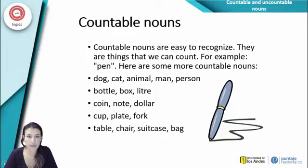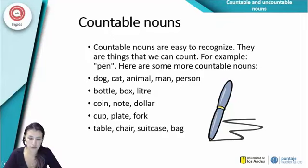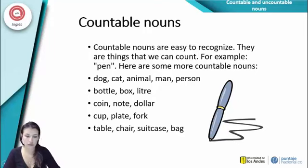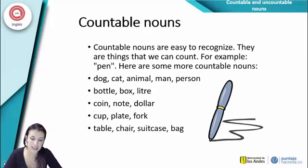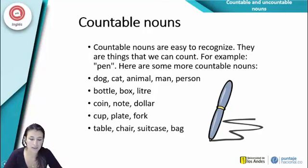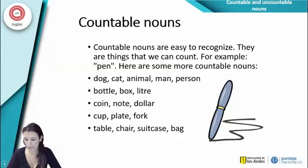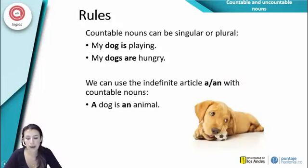Countable nouns are easy to recognize — they are things that we can count, for example, a pen. This is the concept of countable nouns in English. And we have some rules to talk about countable nouns.